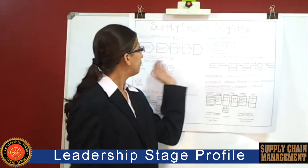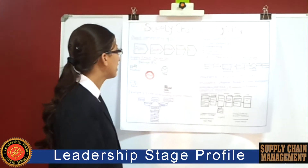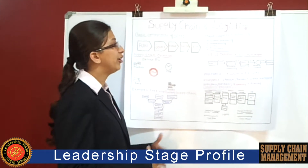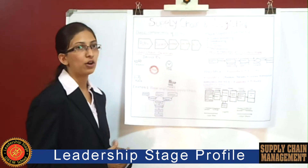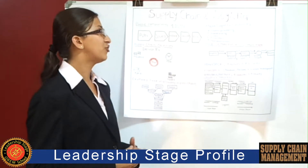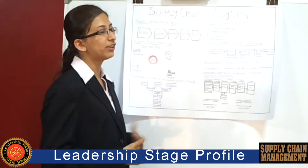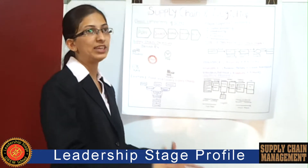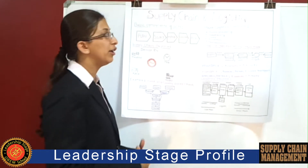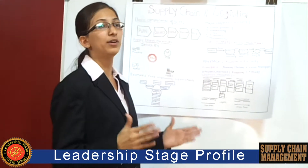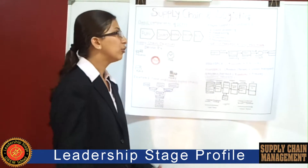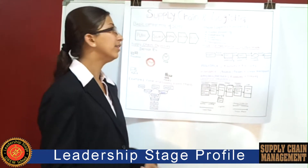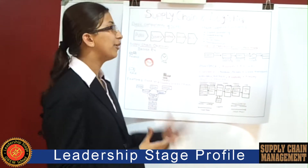The main functions of logistics are order processing, warehousing, cost, inventory, and transportation. Order processing is a process where the orders are brought and arranged through warehousing and transportation, because in order processing many companies require many materials for a single product. These materials come to the company, are stored in the warehouse, sent to the production section, and then the final product is ready.